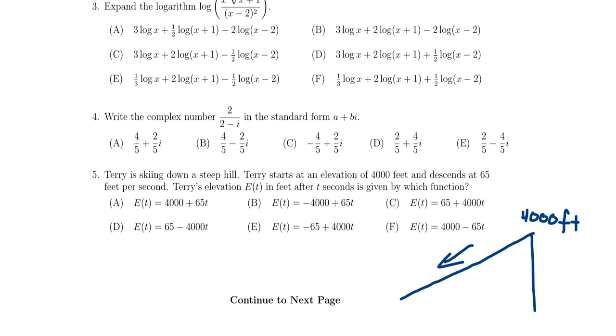If we think of our line being in the standard slope-intercept form, the intercept is going to be 4,000 right there. The slope M would then be negative 65 feet per second.